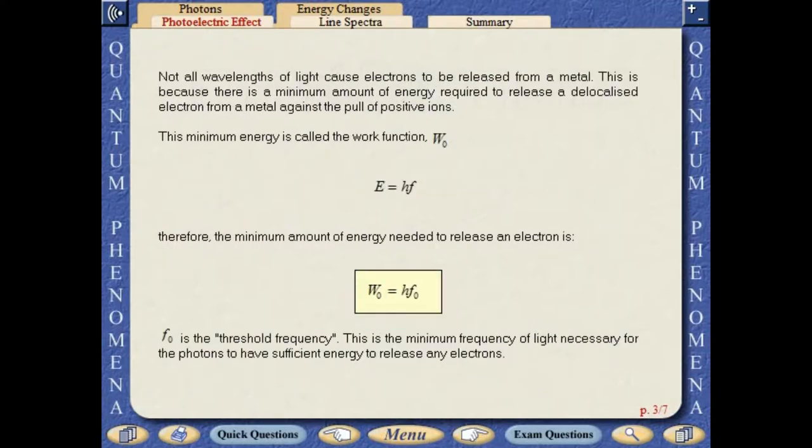Not all wavelengths of light cause electrons to be released from a metal. This is because there is a minimum amount of energy required to release a delocalized electron against the pull of positive ions. This minimum energy is called the work function.